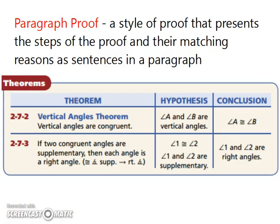Let's look at paragraph proof. A paragraph proof is a style of proof that presents the steps of the proof and their matching reasons as sentences in a paragraph. We have two theorems here: the Vertical Angles Theorem means that vertical angles are congruent, and the other one doesn't have a name, but if two congruent angles are supplementary, then each angle is a right angle.